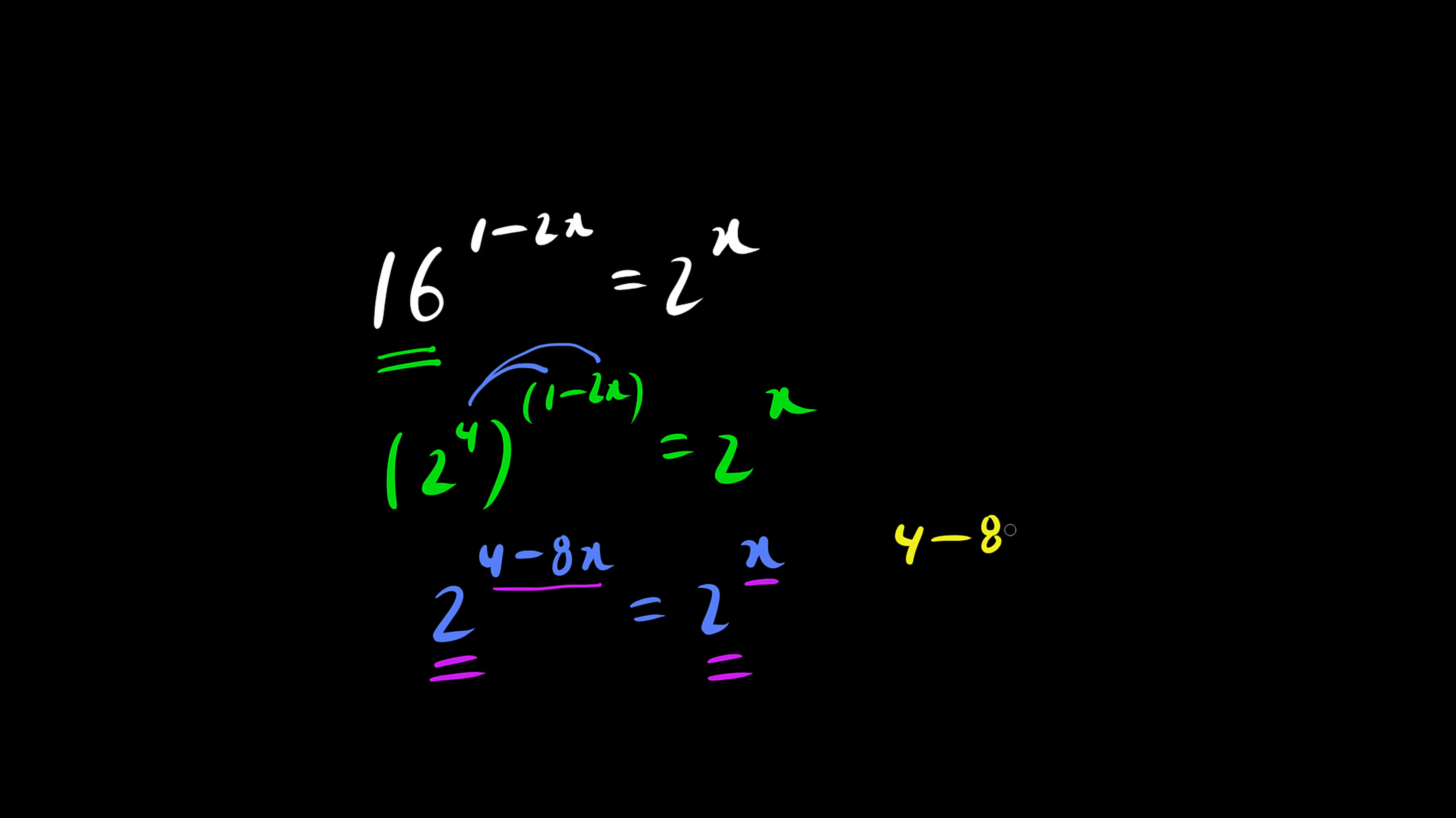4 minus 8x equals x, and the rest is algebra. We throw the negative 8x over so we get 9x equals 4. We divide both sides by 9, so therefore x equals 4 over 9.